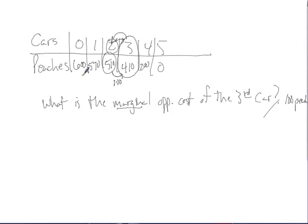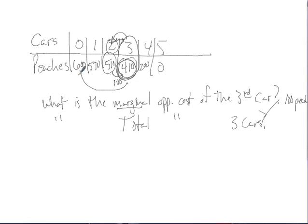What is the total opportunity cost of 3 cars? At 3 cars we're producing 410 peaches. We could have been producing 600. So in total, the number of peaches we had to give up to produce 3 cars is 190 peaches. Remember, cost is not in terms of dollars — it's in terms of what you're giving up.